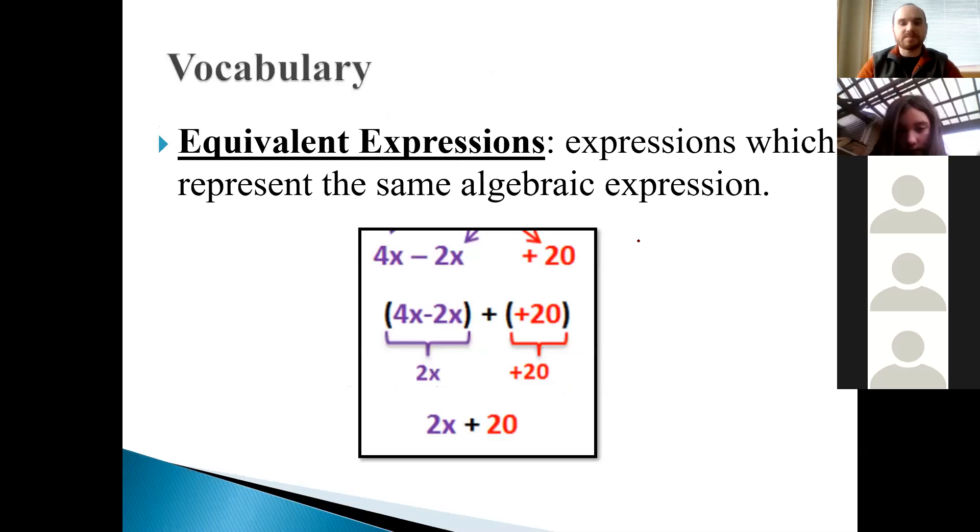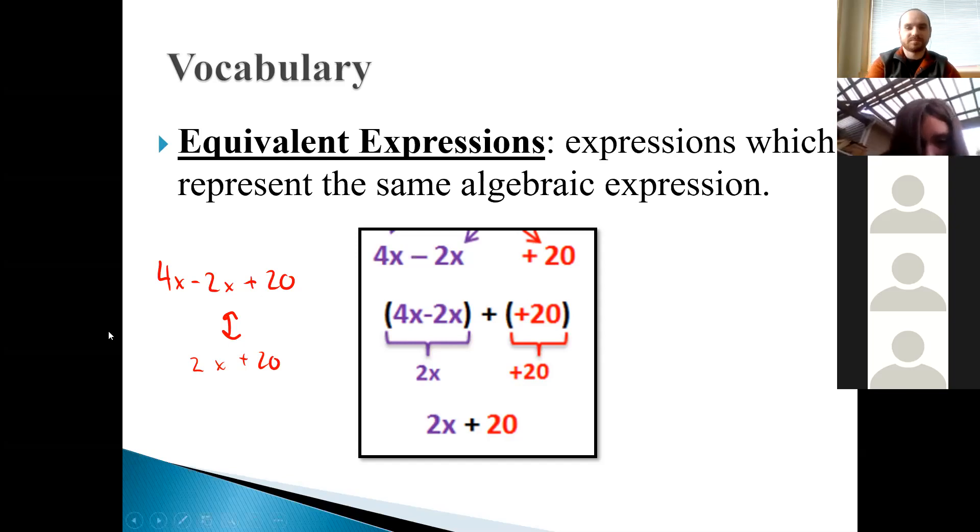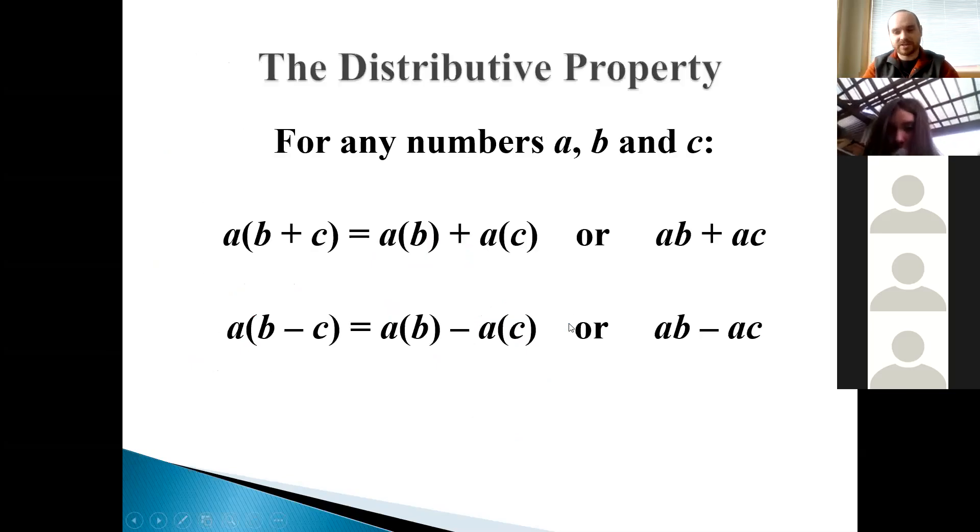Equivalent expressions. So these are expressions which represent the same algebraic expression. That's a lot of different ways of using the word expression to define the word expression. But really what this means is that you have some initial expression. Like for instance, in this case, we have 4x minus 2x plus 20. The simplified version is just 2x plus 20. But these are the same thing. Guys, we don't need to argue about astrology in the chat. It's okay. Not important. Okay. Let's move on to what we actually need to learn about today.